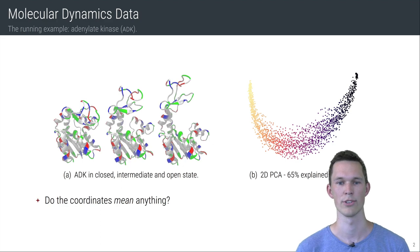To motivate our approach, here's a data set from molecular dynamics where protein adenylate kinase undergoes a large-scale close to open transition. We use simple PCA to obtain a two-dimensional representation of the data which makes it more suitable for analysis. However, it is not clear that the resulting coordinates carry any meaning.